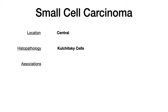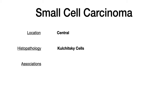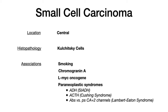Without a doubt, the highest-yield part of small cell carcinoma are the high-yield associations. All of these different lung cancers have expressed tumor markers, associated mutations, and clinical syndromes that you want to look for — this gets tested the most. When it comes to small cell carcinoma, you want to know it's highly associated with smoking. If a question explicitly tells you the person is a non-smoker, think about a different type of lung cancer.